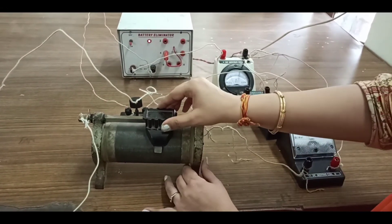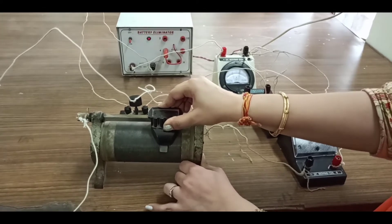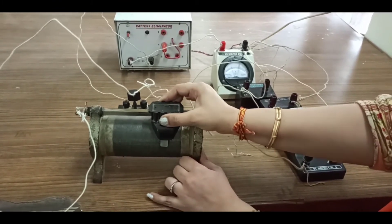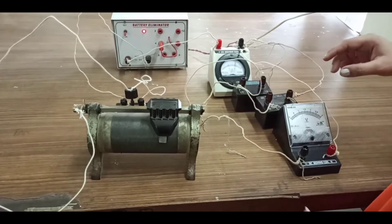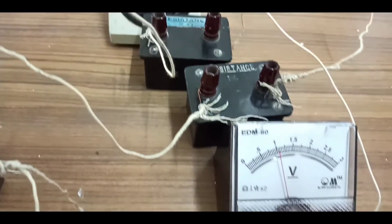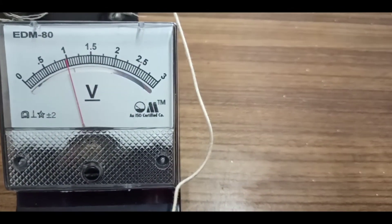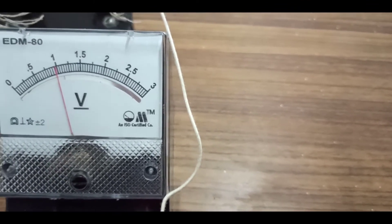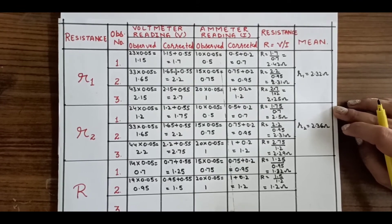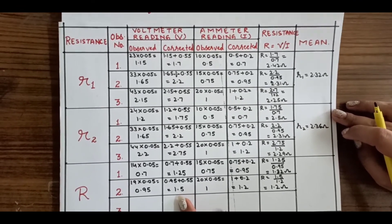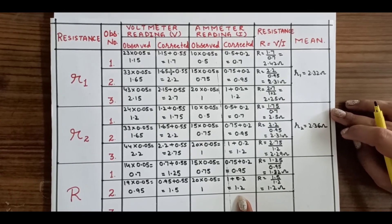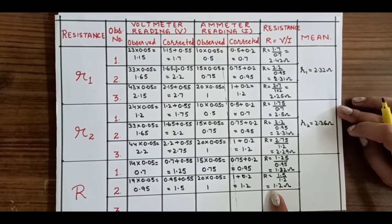Now to take the second reading, I will again adjust the position of the rheostat so that the reading in the ammeter is 20 divisions and the corresponding reading in the voltmeter is 19 divisions. The calculation for the second observation gives a voltmeter reading of 1.5 volt and an ammeter reading of 1.2 ampere, giving a resistance of 1.2 ohms.